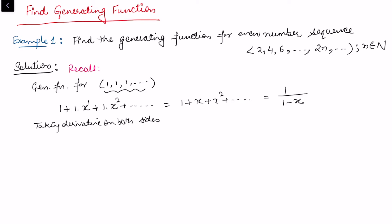On the left side, the derivative of 1 becomes 0, x to the power 1 becomes a constant term 1, x² becomes 2x, so we get 1 + 2x + ...